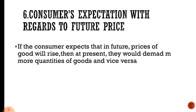The sixth determinant is consumer's expectations with regards to future prices. If the consumer expects that in the future prices of goods will rise, then at present they would demand more quantities of goods, and vice versa. The determinants of demand include: price of the commodity, income of the consumer, prices of related goods, taste and preference of the consumer, size of the population, and consumer's expectations about future prices.